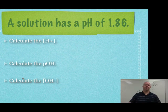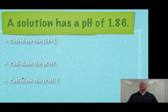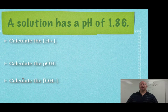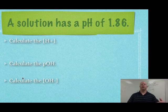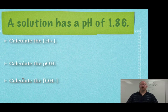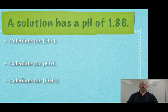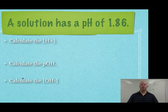So here we've got our practice problems. We have a solution that has a pH of 1.86. And what we want to do is we want to solve for hydrogen ion concentration. Then we want to calculate the POH. And then calculate the hydroxide ion concentration for this. So what I'm going to do is give you guys a minute to go ahead and work this out on your own. Go back to those equations. And then we'll come back and we'll take a look at the answer key for these. So go ahead and do that now.